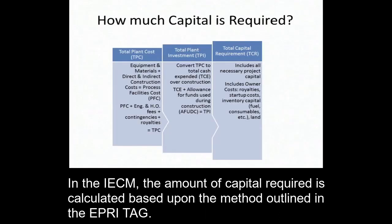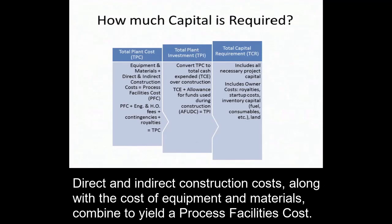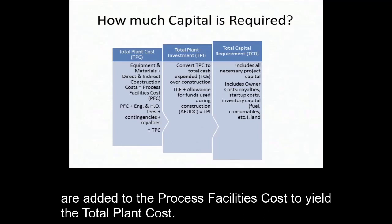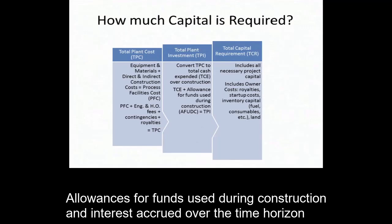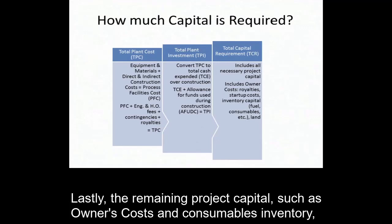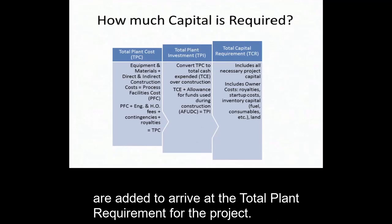In the IECM, the amount of capital required is calculated based upon the method outlined in the EPRI TAG. Direct and indirect construction costs along with the cost of equipment and materials combine to yield a process facilities cost. Engineering and home office fees along with contingencies and royalties are added to the process facilities cost to yield the total plant cost. Allowances for funds used during construction and interest accrued over the time horizon are then added to the total plant cost to yield the total plant investment. Lastly, the remaining project capital such as owner's costs and consumables inventory are added to arrive at the total plant requirement for the project.